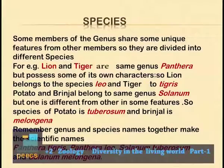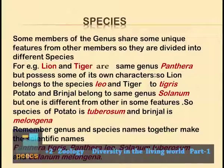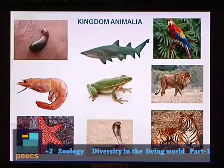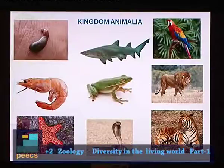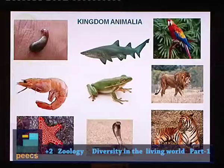Genus and species names together make a scientific name. For example, Panthera tigris is the zoological name of tiger, Panthera leo for lion, Solanum tuberosum for potato and Solanum melongena for brinjal. Organisms under kingdom Animalia include leeches, prawns, starfish, sharks, tree frogs, cobras, parrots, lions and tigers — all have different characters.